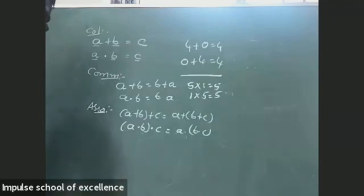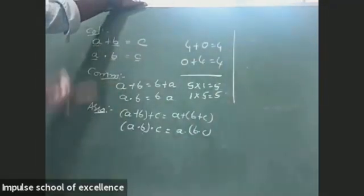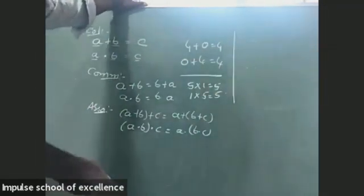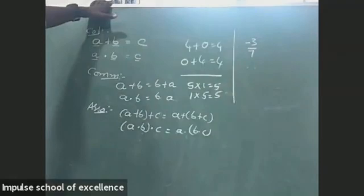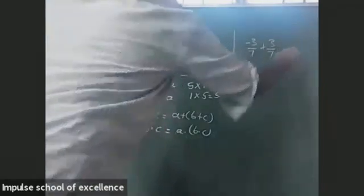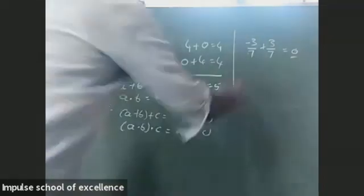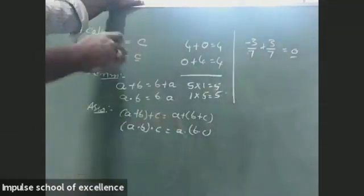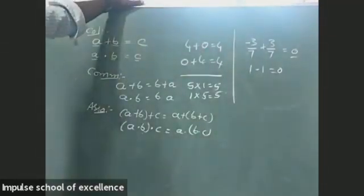So in the same way, we have inverse also. Additive inverse and multiplicative inverse. Additive inverse is the negative or opposite side of a value. For example, for −3/7, the additive inverse is +3/7. You should remember: for 0, there is no additive inverse. For +1, −1 is the additive inverse.